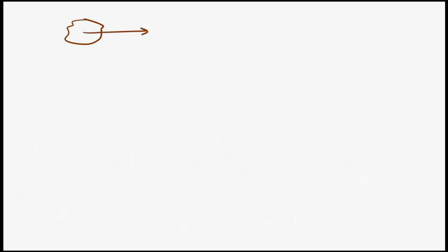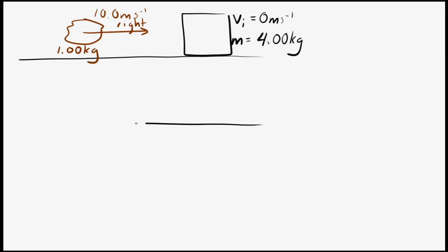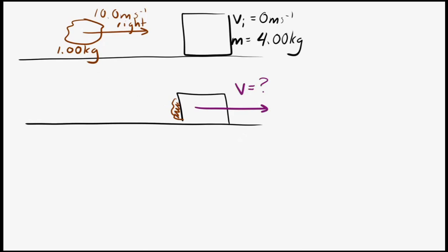Let's look at a couple of examples. First, a lump of clay moving toward a block. The clay impacts and sticks to the block — an inelastic collision. The clay is initially moving at 10 meters per second to the right with a mass of one kilogram. The block is initially at rest with a mass of four kilograms. After the impact, the clay is stuck to the block and they move off together. We want to find their combined velocity.